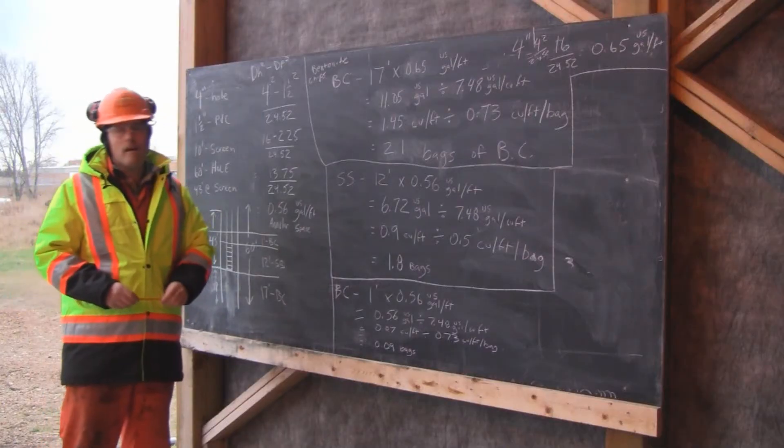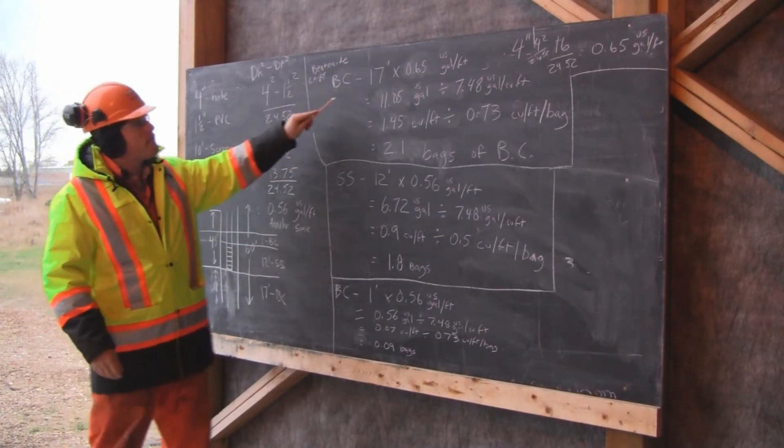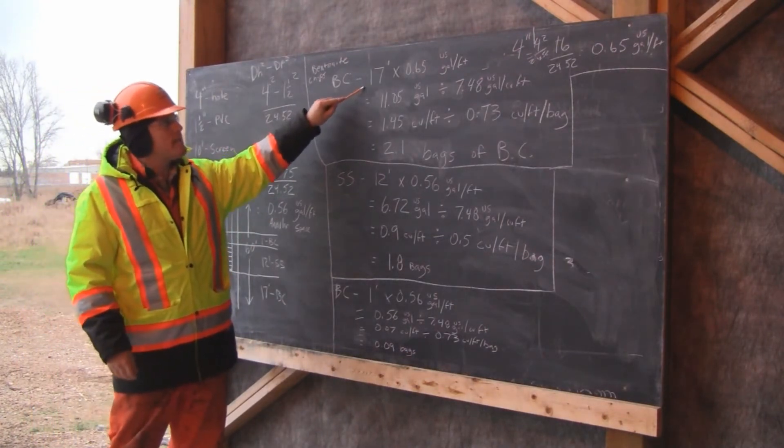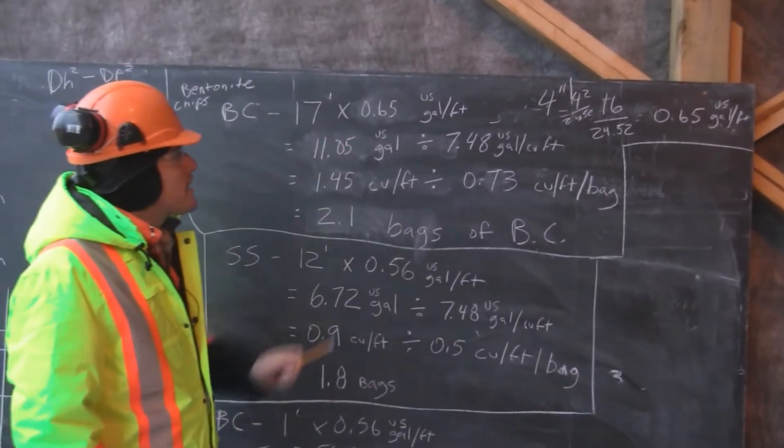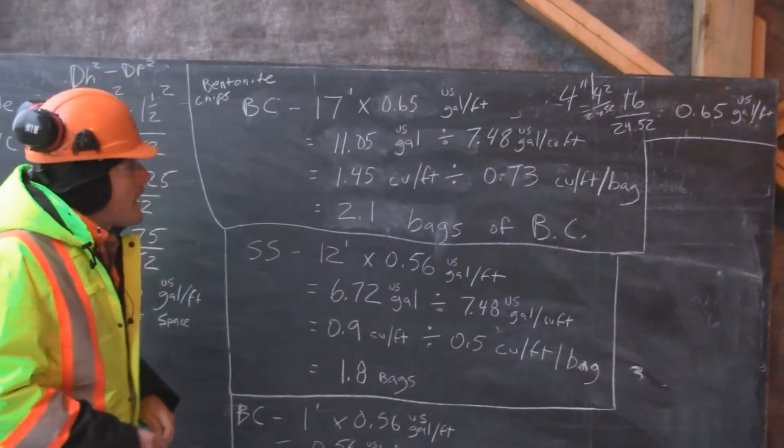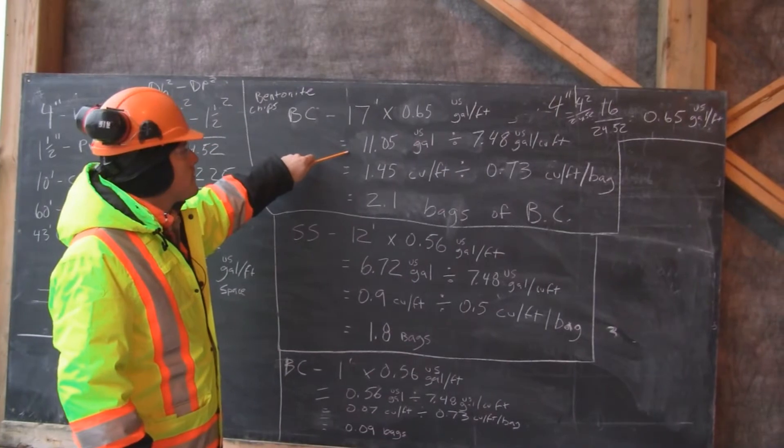To figure out how many bentonite chips we will use, we take the feet of open hole, which is 17, and multiply that by our 0.65 US gallons per foot. That gives us an answer of 11.05 US gallons.